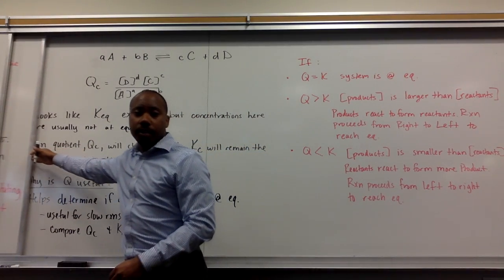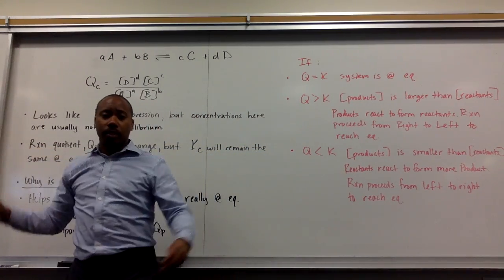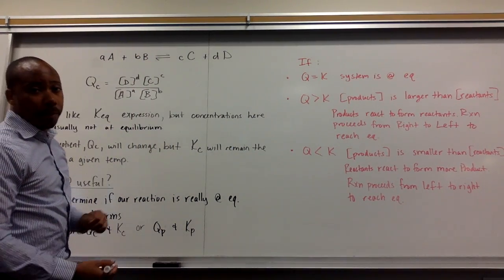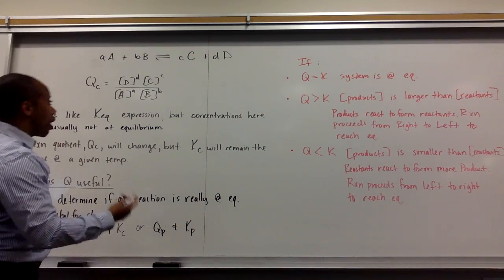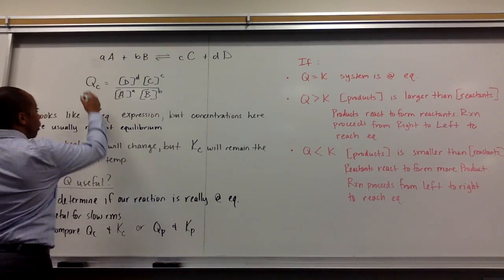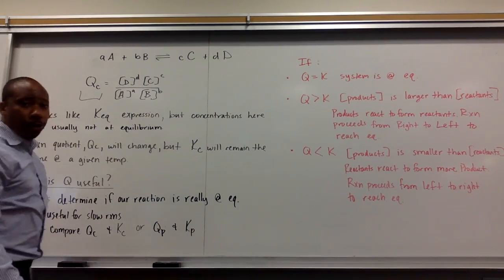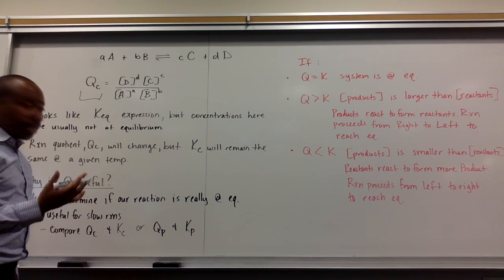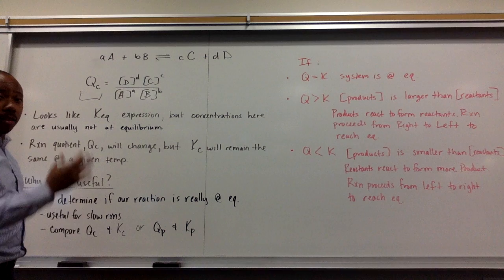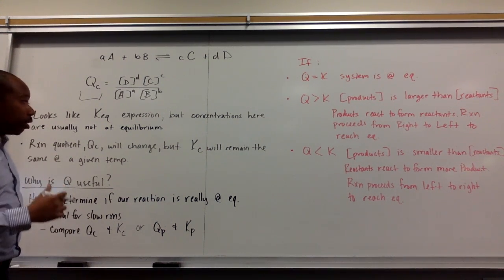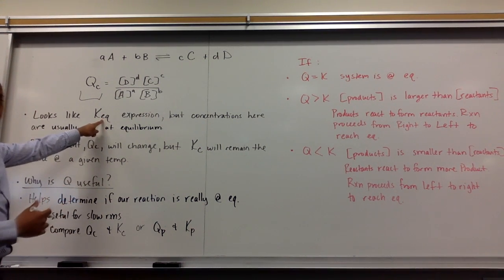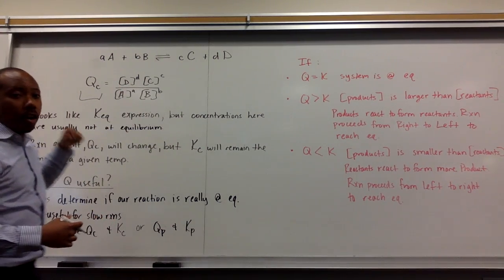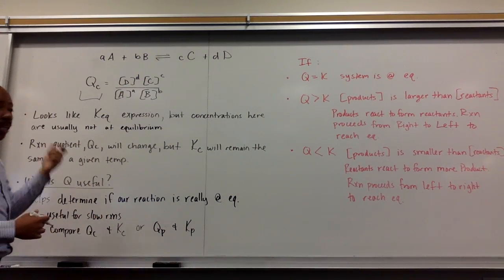Now, let's take our generic balanced chemical equation that we have in the past. A plus B goes to C plus D, and they're in equilibrium. If we're going to write an expression for our reaction quotient, it looks very similar to our equilibrium constant expression that we've had in the past, that we just substituted into. So, it looks like KEQ, but these concentrations that you substitute in, or the pressures you substitute in, are not necessarily going to be at equilibrium.